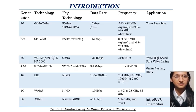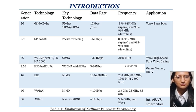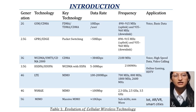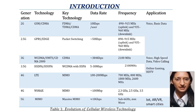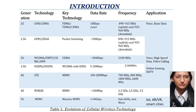Initially, wireless communication relied on single input single output (SISO) systems, in which the transmitter and the receiver used only a single antenna, which limited capacity and reliability. The latest evolution involves massive MIMO, in which hundreds or even thousands of antennas are employed at the base station, offering vast improvements in spectrum efficiency and coverage. 5G networks rely heavily on massive MIMO for their high-capacity and low-latency goals.